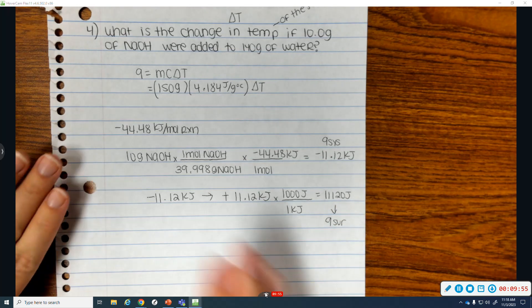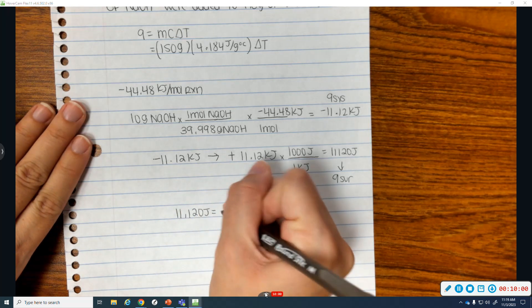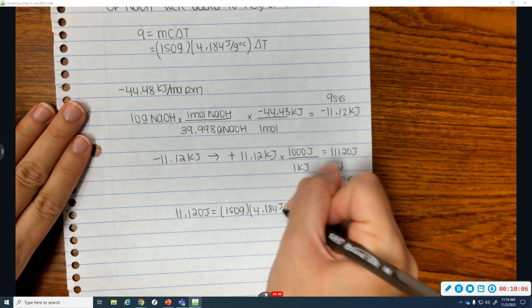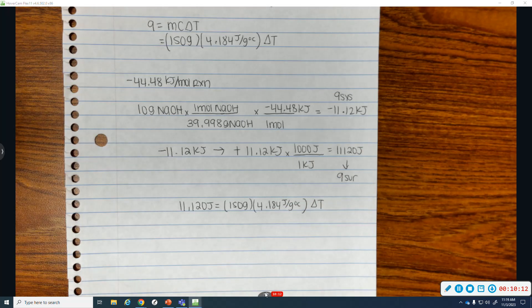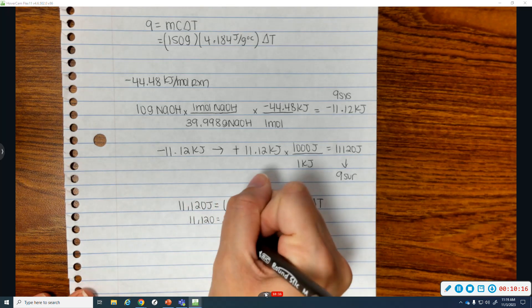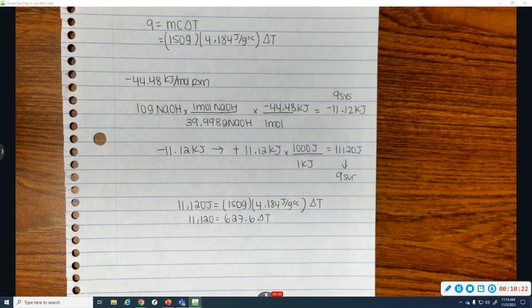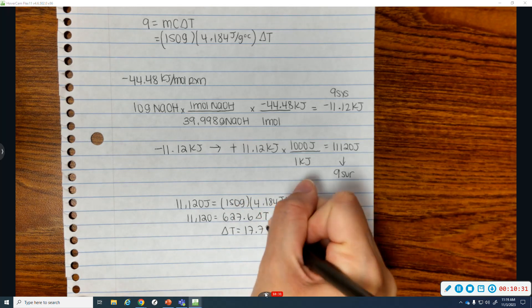Now I can plug it into my MCAT. So 1,120 joules equals 150 grams times 4.184 joules per gram degrees Celsius times delta T. 150 times 4.184 is 627.6 times delta T. Divide both sides by 627.6. The change in temperature is 1.78 degrees Celsius.